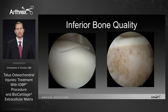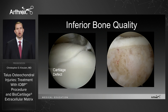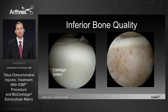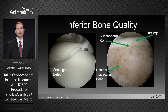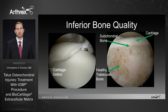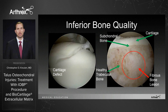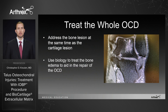Now if we look at this image — an arthroscopy picture on the left — you can see that there is a cartilage defect. Using a probe, the lesion is shown to be unstable and therefore it should be removed. Once it is removed, you can see that there is good subchondral bone, good cartilage, and healthy trabecular bone surrounding the lesion. However, there is fibrosis and unhealthy tissue present. So we need to use biology to treat the bone edema and aid in the repair of the osteochondral defect.